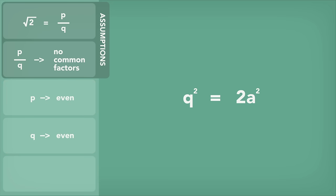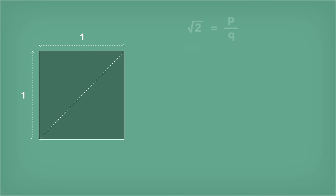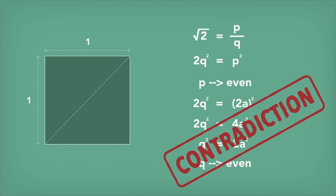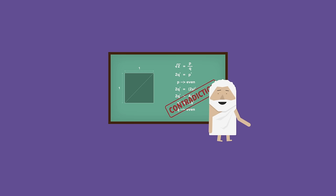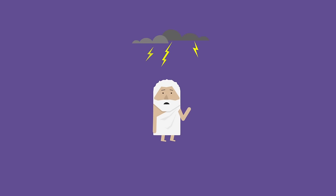But if that was true, then they had a common factor of 2, which contradicted the initial statement. And that's how Hippasus concluded that no such ratio exists. That's called a proof by contradiction, and according to the legend, the gods did not appreciate being contradicted.